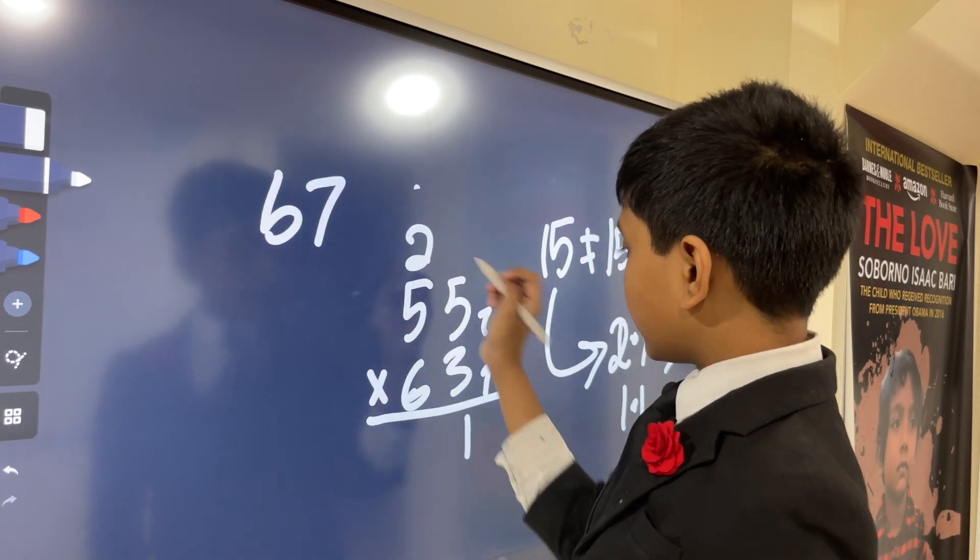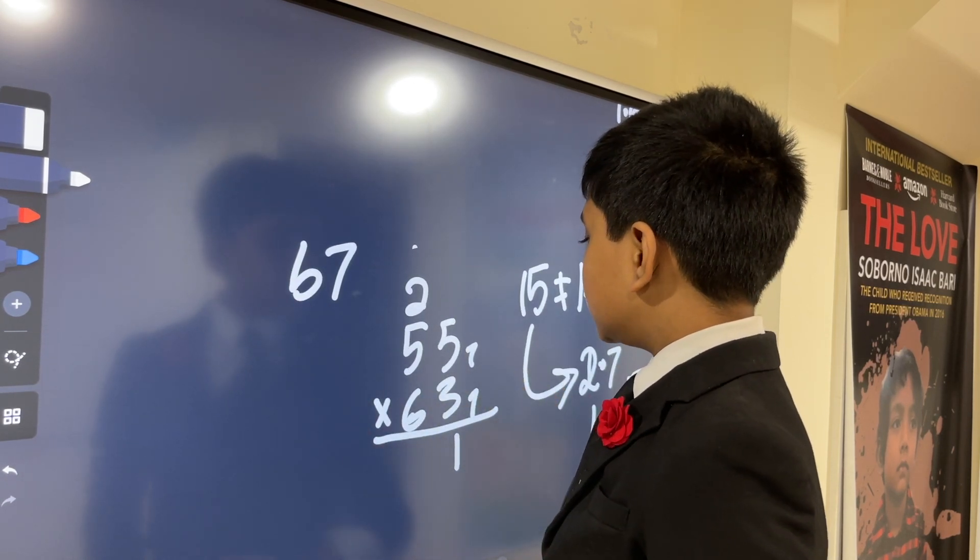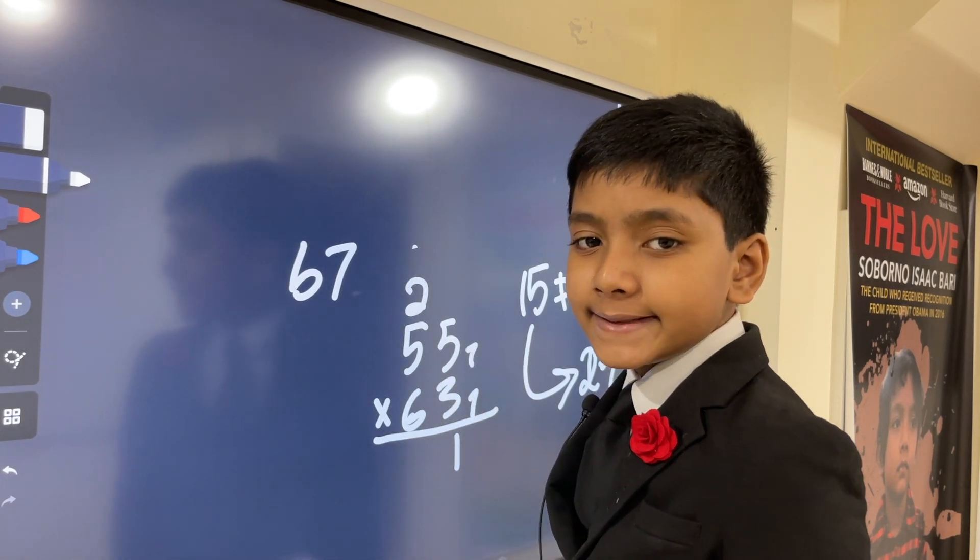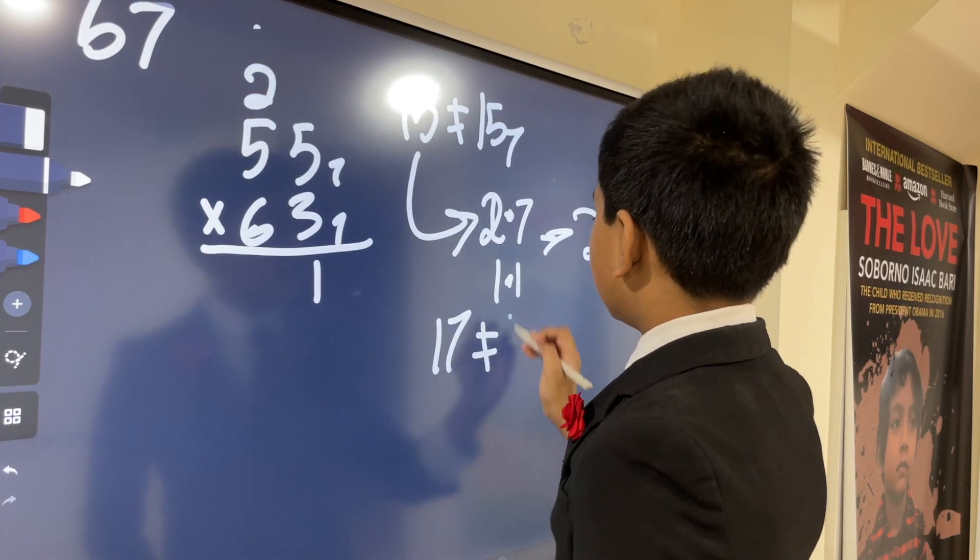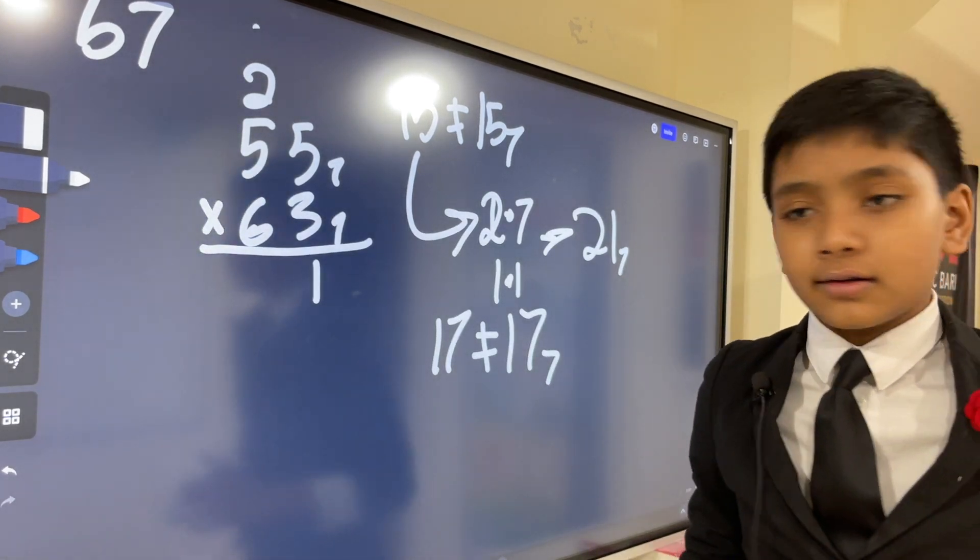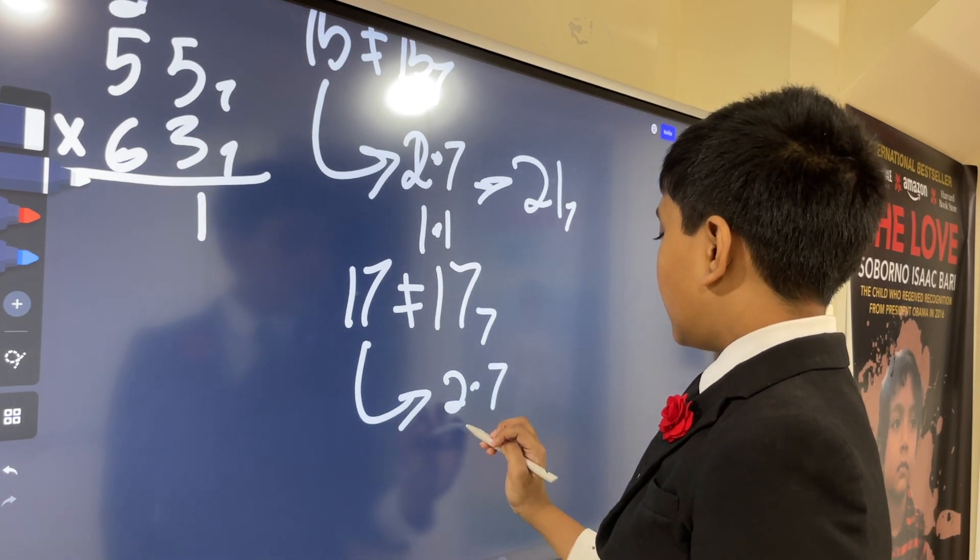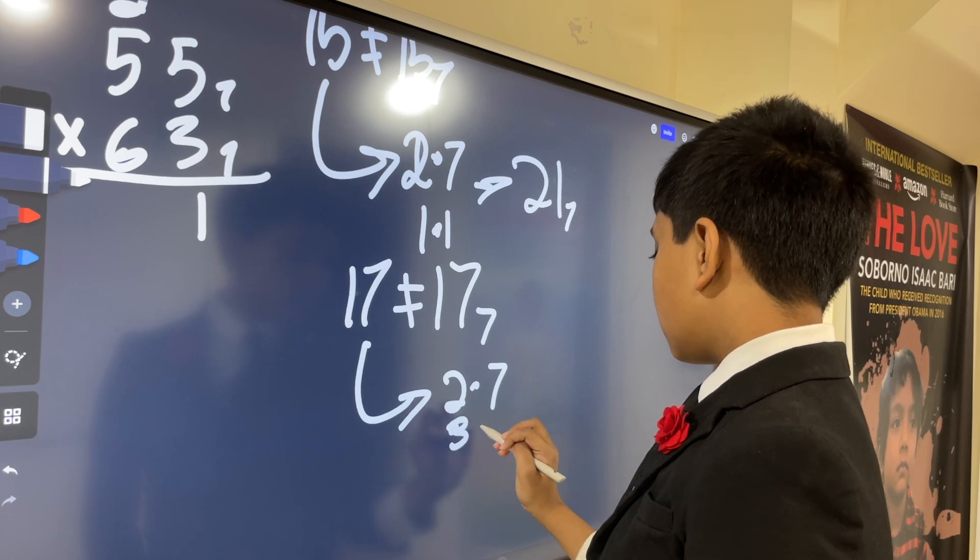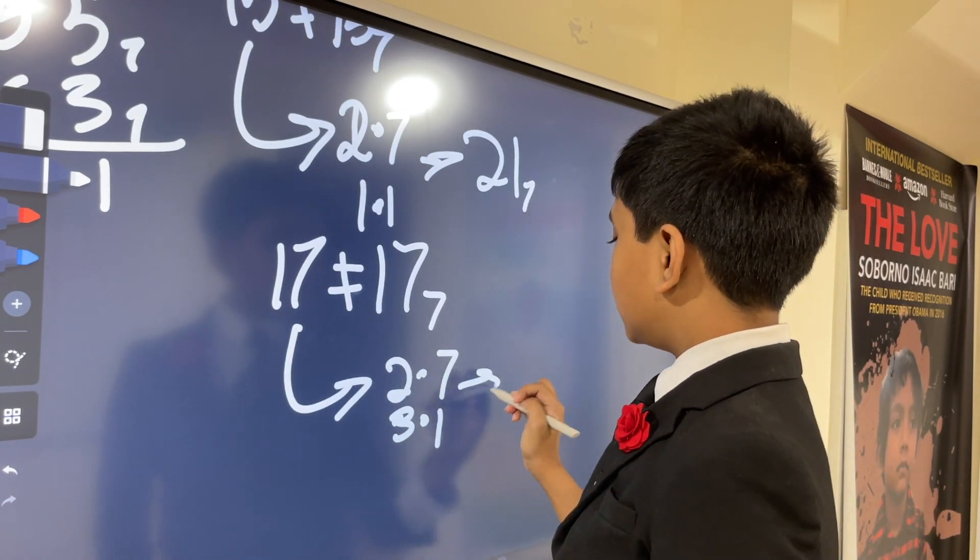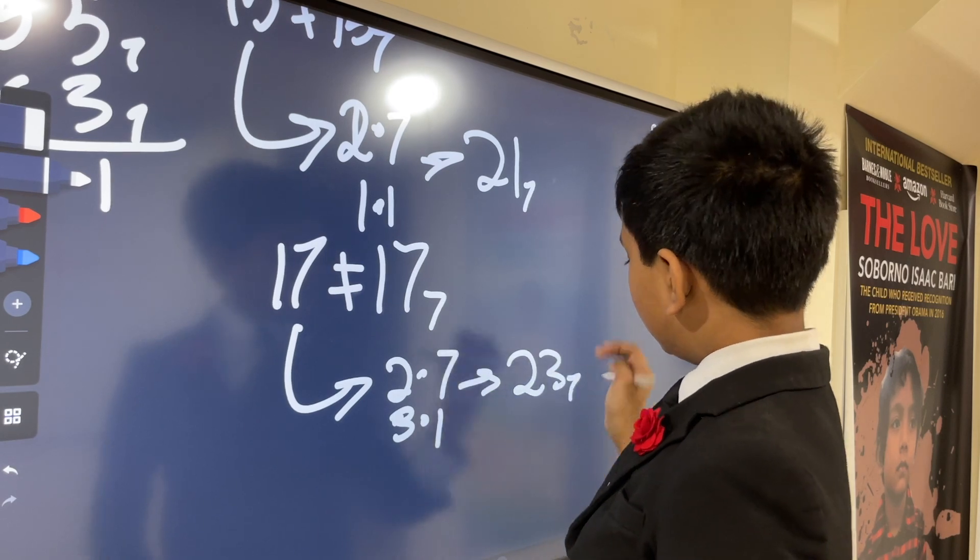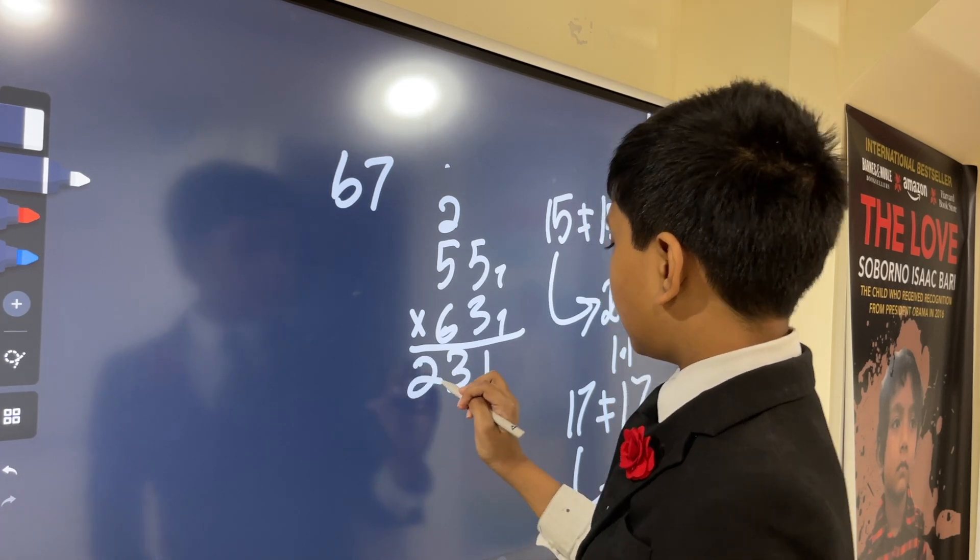3 times 5 plus the carried 2. 17 isn't equal to 17 base 7. This is instead equal to 2 times 7 and 3 times 1. That means it's 23 base 7. There's nothing else to carry, so we just write it like that.